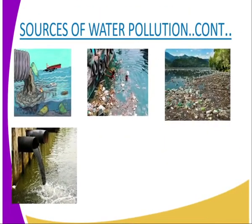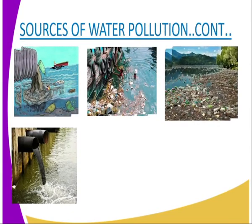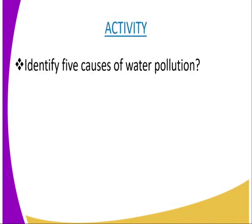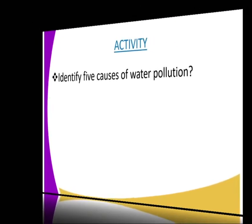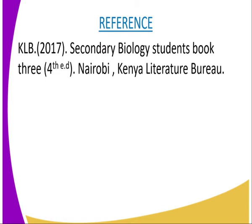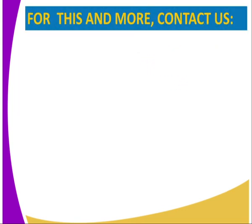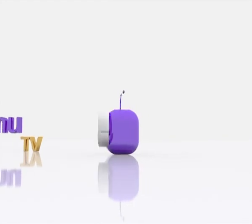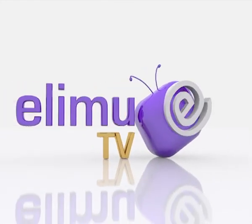Having done that, we can have the following activity, whereby you will be required to identify causes of water pollution. For this lesson, you can refer to KLB Secondary Biology Students Book 3, fourth edition, Nairobi, Kenya Literature Bureau. For this lesson and many more biology lessons, you can send us an SMS through the number appearing on our screen, or subscribe to our YouTube channel, Facebook page, or tweet us at Alimutv — all under the handle Alimutv underscore Kenya. Thank you.